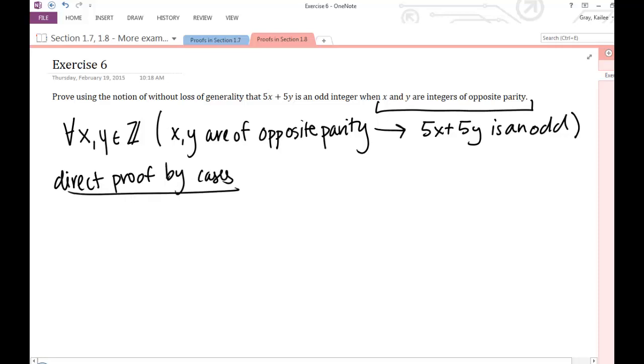And again, if that doesn't work, you just keep trying different methods, so you try proof by contradiction, proof by contraposition, and see if you can find a way to prove this. And those methods will work too, but I'm going to show you this direct proof by cases so that we can talk a little bit more about this without loss of generality.